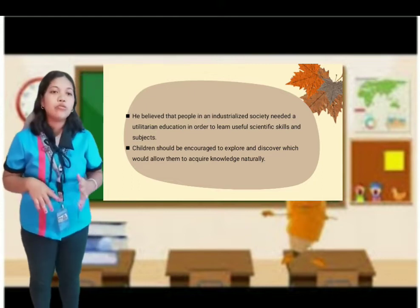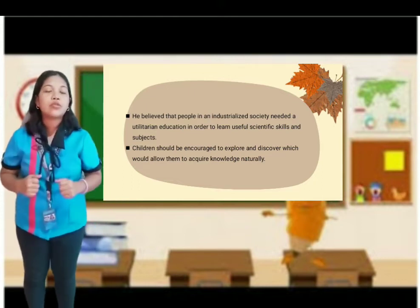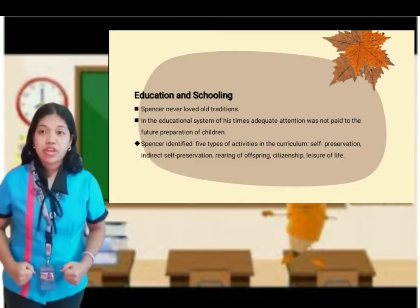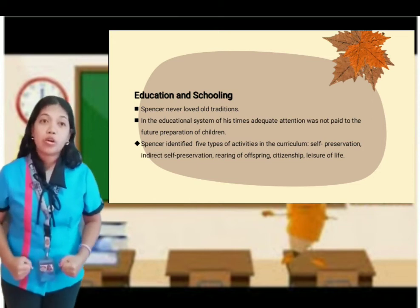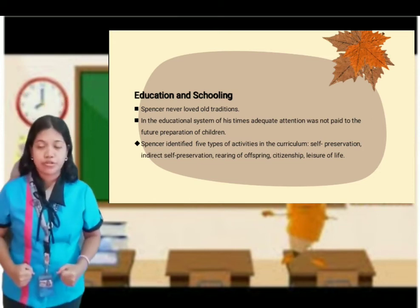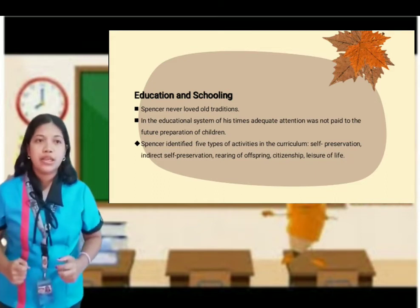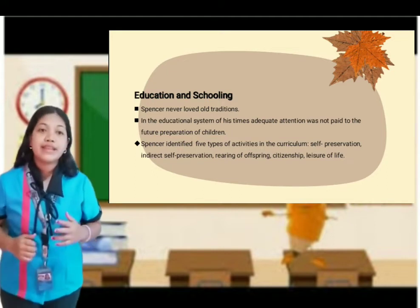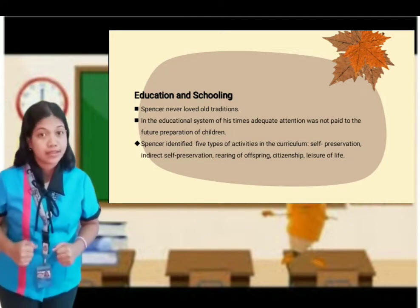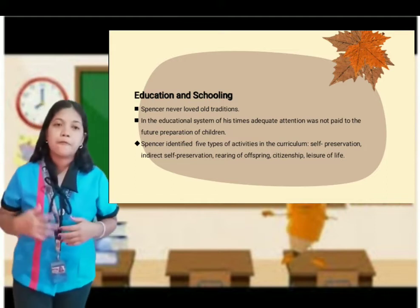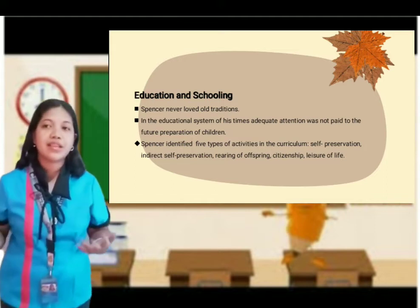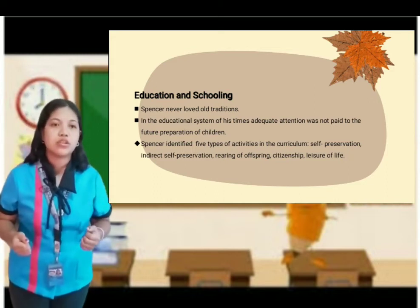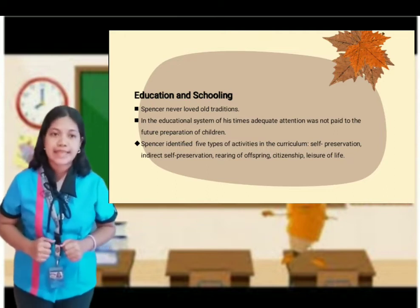A student should only engage in activities that would allow him or her to survive in society. According to Spencer on Education and Schooling, he never loved old traditions. He wanted to lead the child to a very high ideal by developing his interests. He identified five types of activities in the curriculum: self-preservation, indirect self-preservation, rearing of offspring, citizenship, and leisure of life.